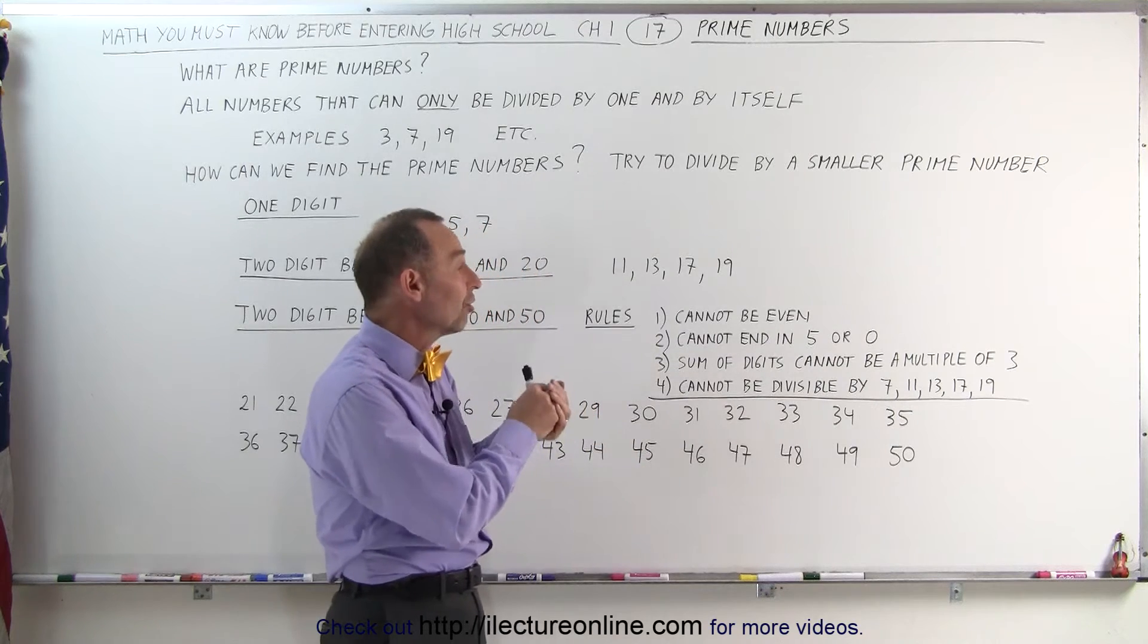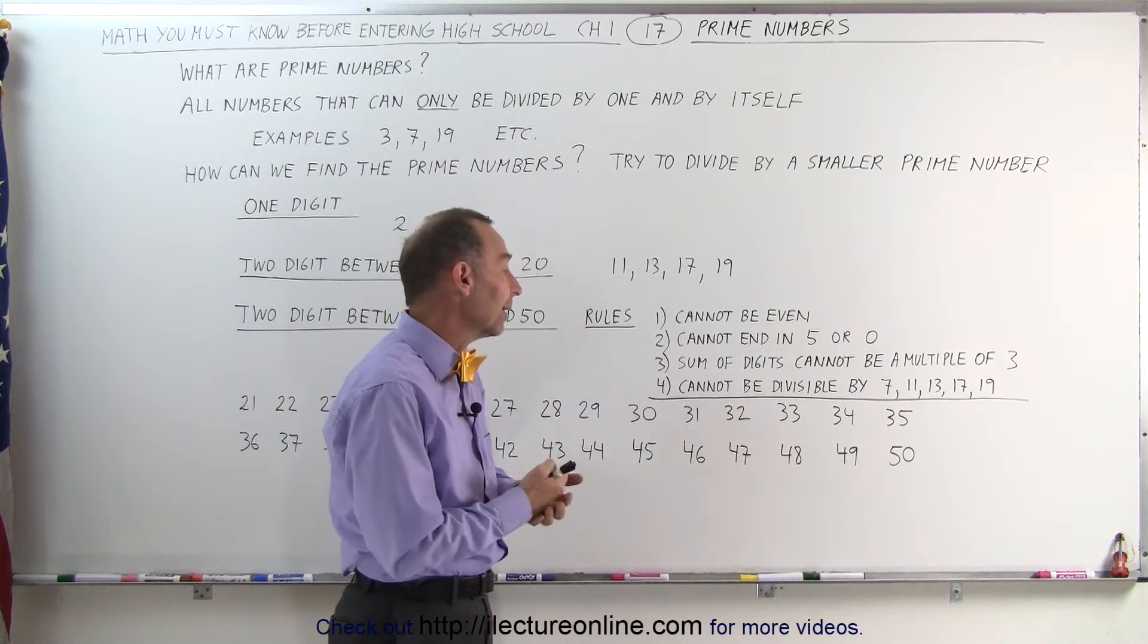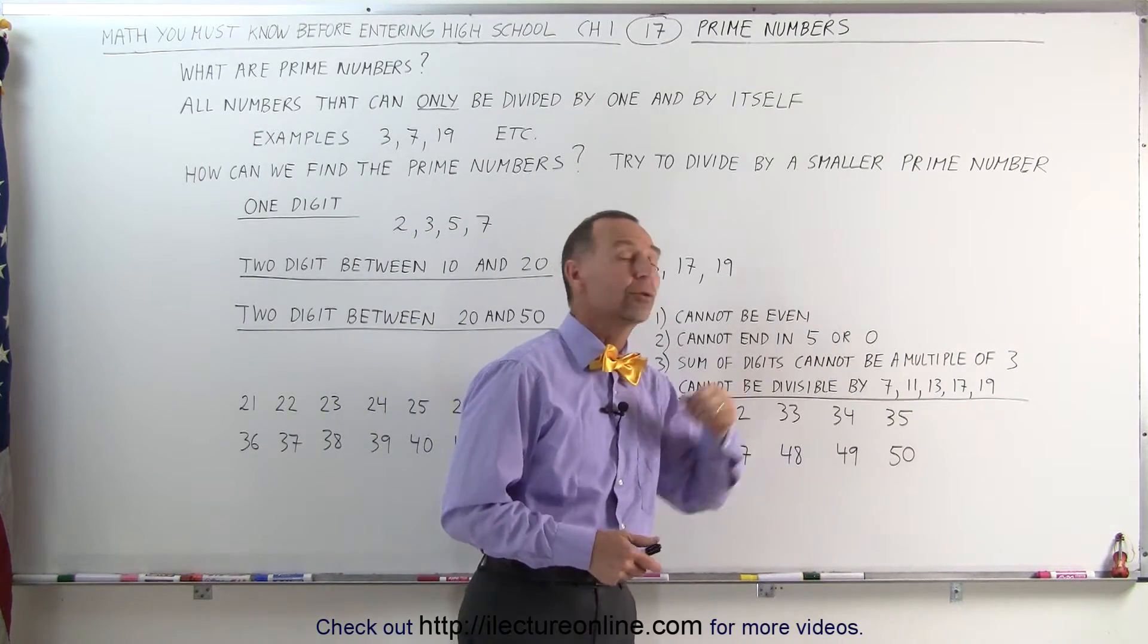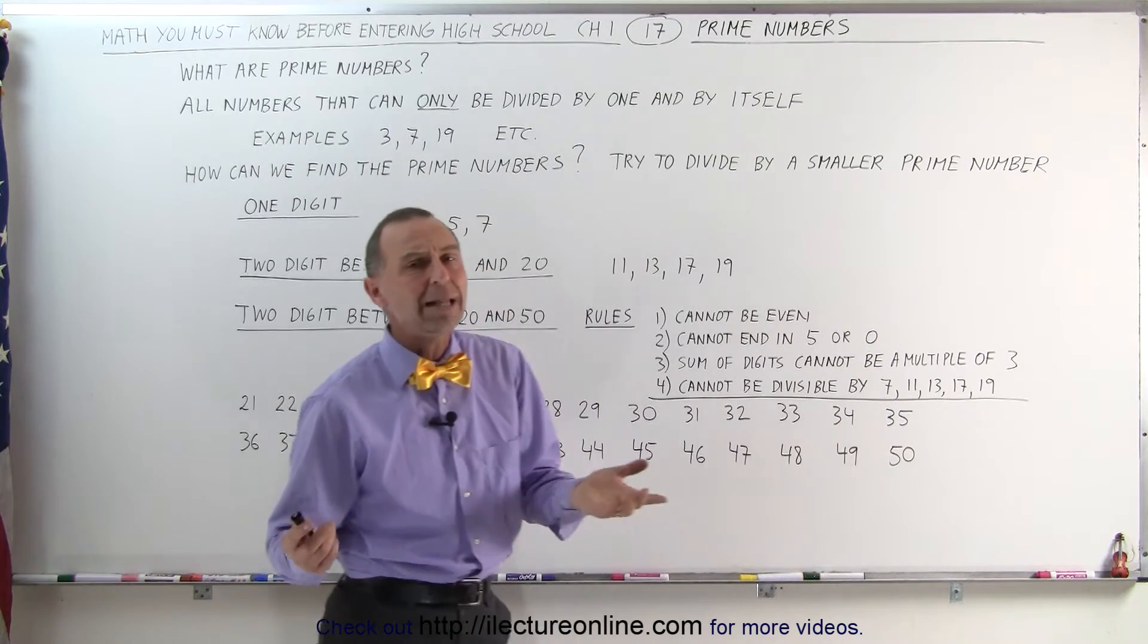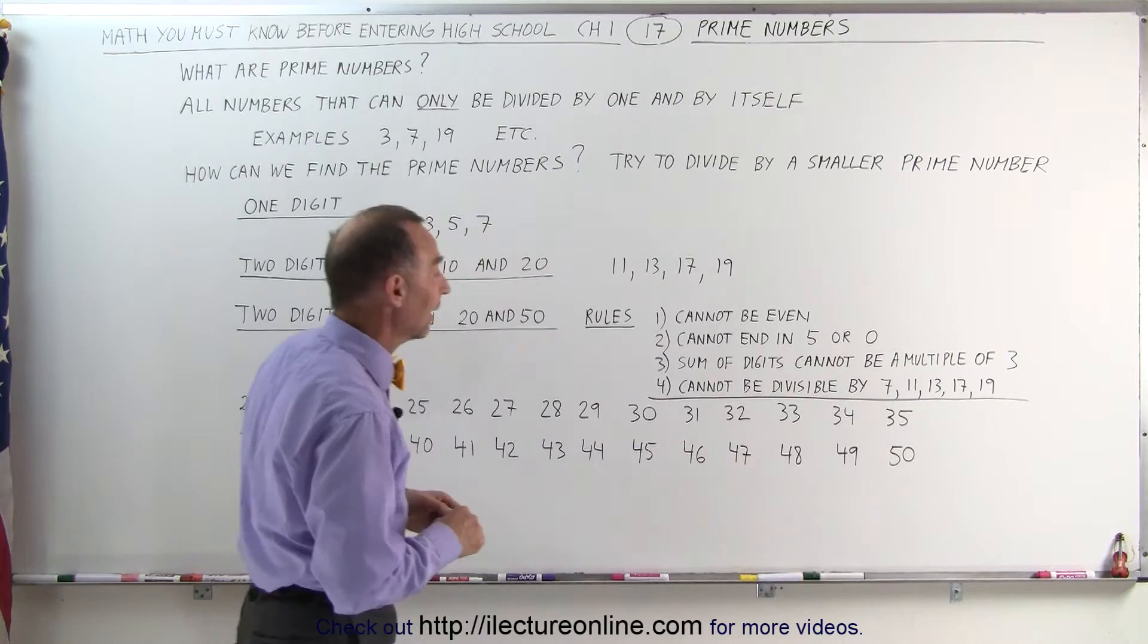The sum of the digits of the number cannot be a multiple of 3. And then finally, it cannot be divisible by smaller prime numbers such as 7, 11, 13, 17 and 19. That may not be as obvious, but sometimes we do need to look at that to see if we're dealing with a prime number or not.